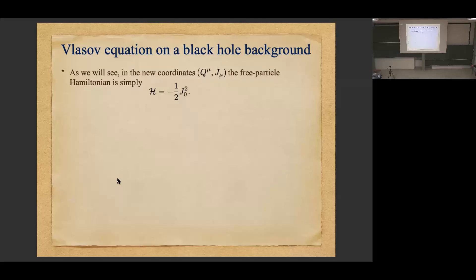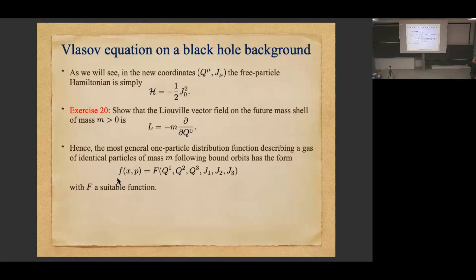The first exercise is to show that the Liouville vector field, when restricted to the future mass shell, has a specific form, knowing that these are symplectic coordinates. This is a simple calculation if you understood what I told you two days ago. The Liouville vector field now basically tells you it's just a derivative along q_0, so it's just a directional derivative, and it's very easy to solve the Liouville equations.